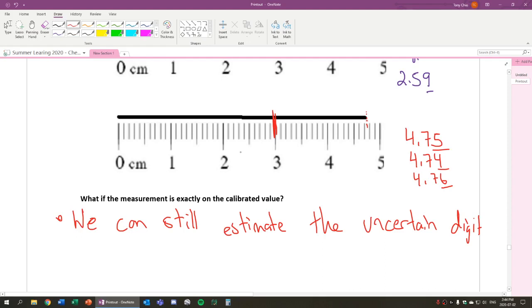So, for example, if it lands right here, it's still going to be 3.00. If it lands like, for example, right here, it could be 3.90. Hence why we can, for example, still estimate that last digit. That could still be 3.90. Because that zero is still uncertain, but it's still there.